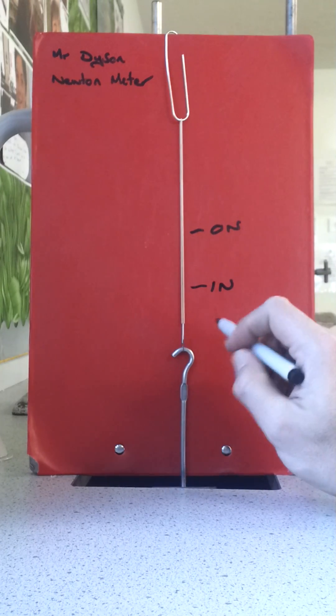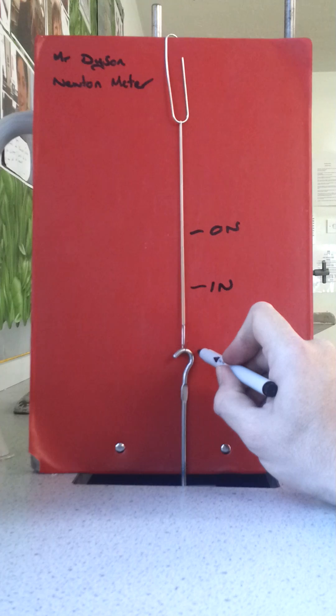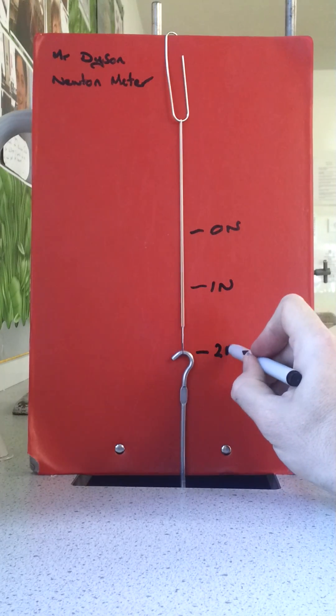Making sure that it's free-hanging, I'm going to draw a line across where the bottom of the paper clip is again, and that's going to be two newtons.